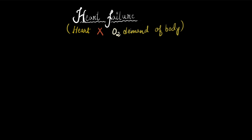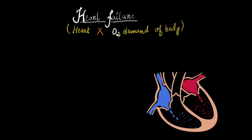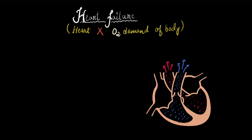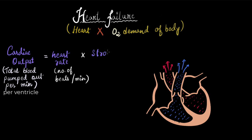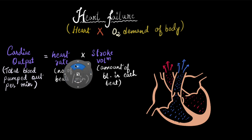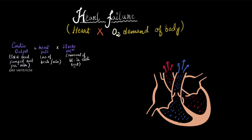Now in a normal healthy heart, how does the heart meet the oxygen demand of the body? By pumping blood out properly to all body tissues. So if there is any disturbance in the pumping out of the blood, or in the total amount of blood that is being pumped out, we can expect a heart failure. So how do we measure or quantify the amount of blood pumped out of the heart? We have already learned about it — it is called the cardiac output. Cardiac output is the total amount of blood pumped out by the heart per minute per ventricle, and it is directly proportional to the heart rate and stroke volume.